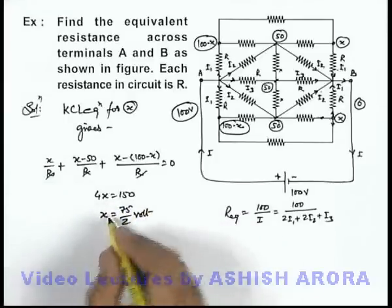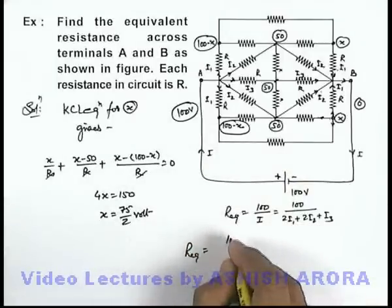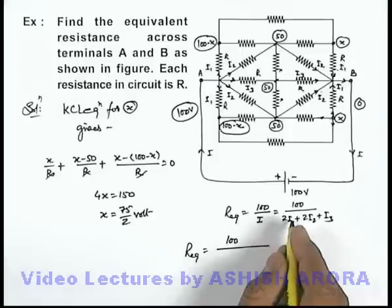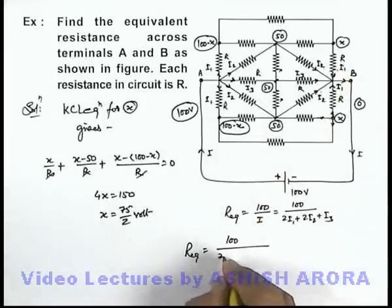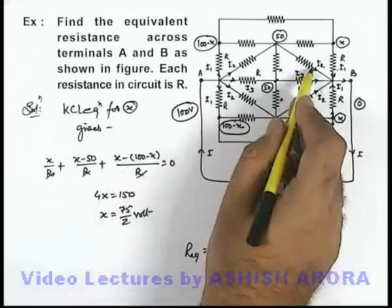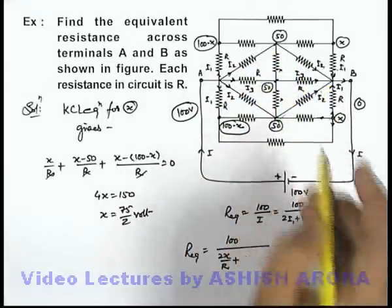And if you know the value of x you can easily write down the value of R_eq and this will be hundred divided by 2i1 - here i1 we can write as x upon R, so this will be 2x by R plus i2 we can write as 50 minus 0 by R, and i3 can also be written as 50 minus 0 by R.